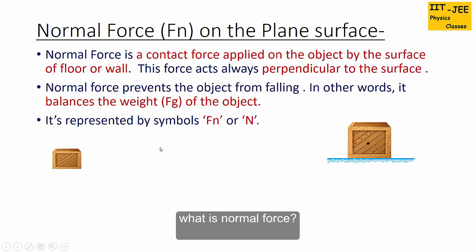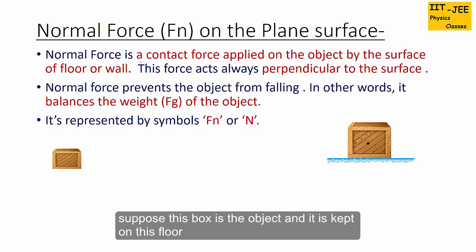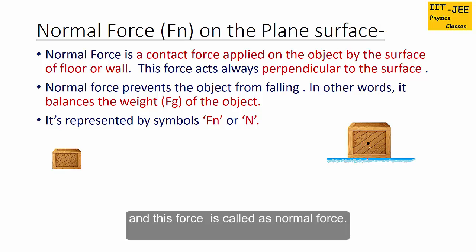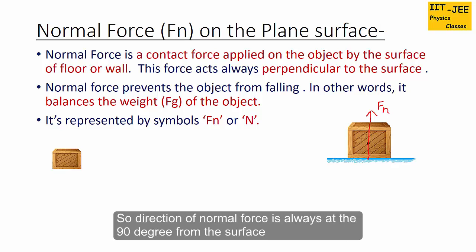So what is normal force? Normal force is a contact force applied on the object by the surface of the floor or the wall. Suppose this box is the object and it is kept on this floor. As the box is in contact with the surface of this floor, the floor would apply a force on the box, and this force is called normal force. This force acts always perpendicular to the surface. Normal force is represented by the symbols Fn or simply big N.